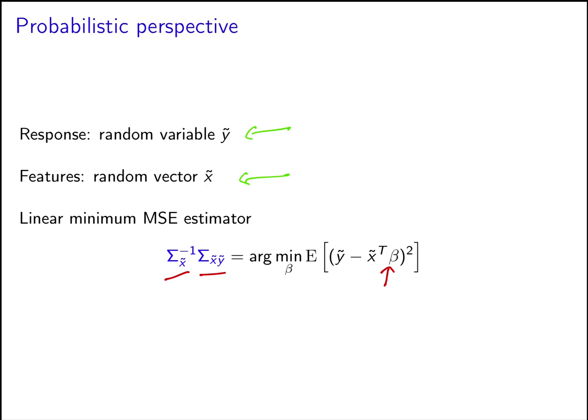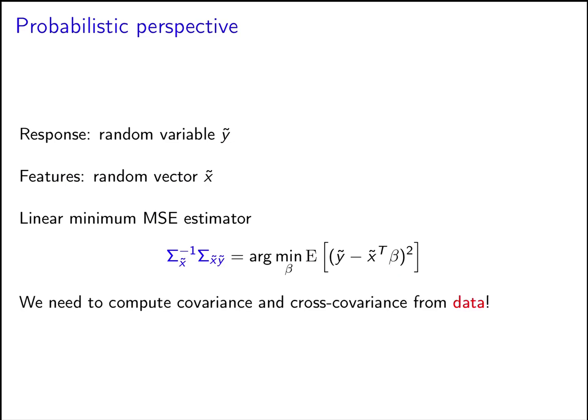The issue with this result, of course, is that we need to compute this covariance and this cross-covariance from actual data, because random variables and random vectors are great for modeling, but at the end of the day, when we need to estimate actual quantities, we have to do it from data.